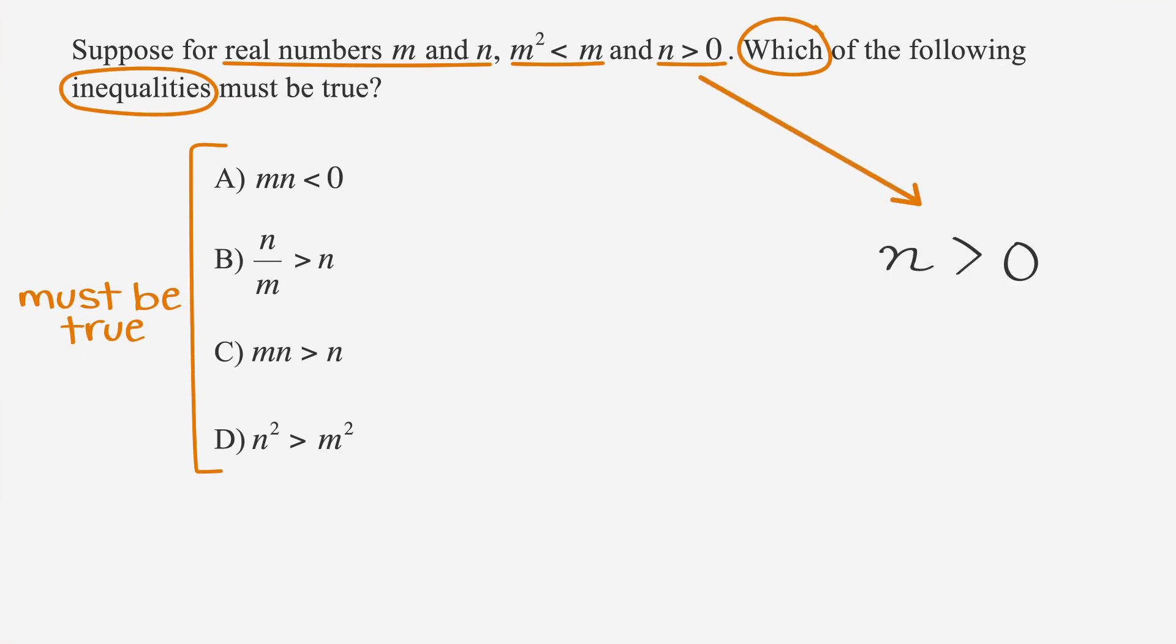The easiest place to start is n. All we're told is that n is greater than zero. Let's make n equal 4.